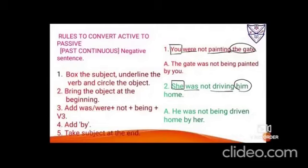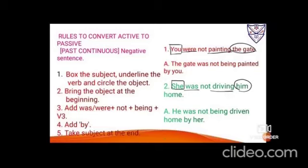Rules to convert active to passive — past continuous negative sentences: Step 1 — box the subject, underline the verb, circle the object. Step 2 — bring the object to the beginning. Step 3 — add 'was'/'were' as needed, then immediately add the negative word 'not'. Step 4 — take the -ing from the verb → 'being', then the verb in V3 form. Step 5 — add 'by', take the subject to the end.